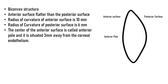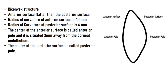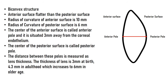The center of the posterior surface of the lens is known as the posterior pole. The distance between the anterior pole and the posterior pole is the lens thickness. Lens thickness is not constant throughout life — it is about 3 millimeters at birth, increasing to about 4.3 millimeters in adulthood.